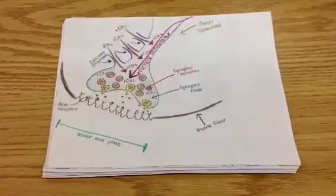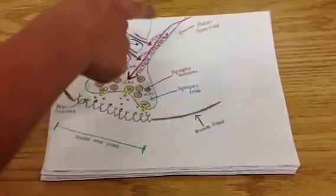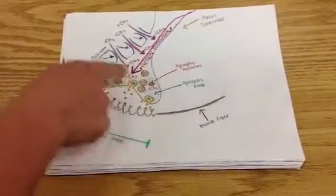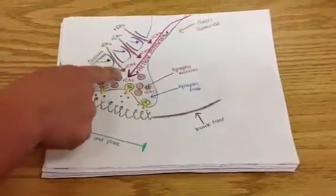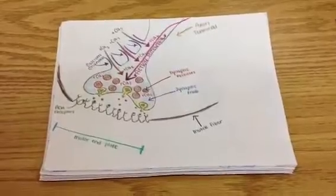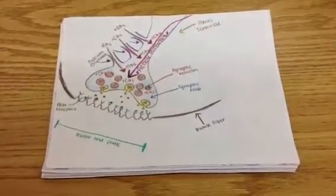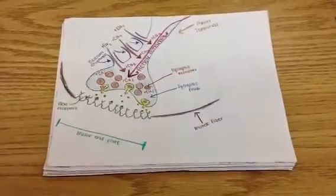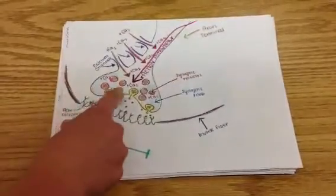This is showing the action potential entering the axon terminal. The action potential arrives at the synaptic knob. The calcium channels here open and allow calcium to move into the cell. The increased calcium causes the synaptic vesicles, which are filled with acetylcholine, to fuse with the membrane.